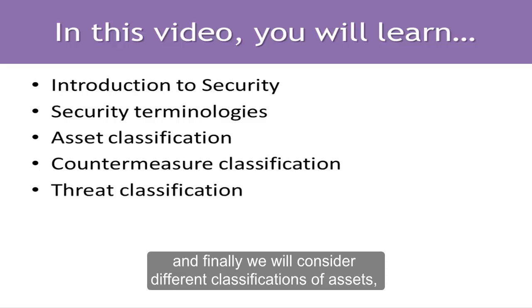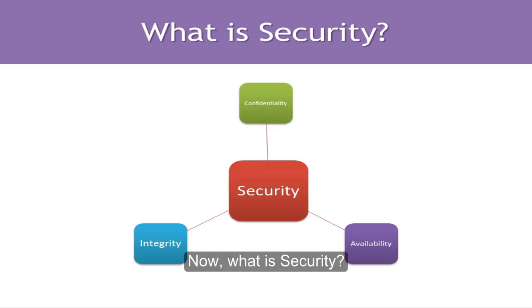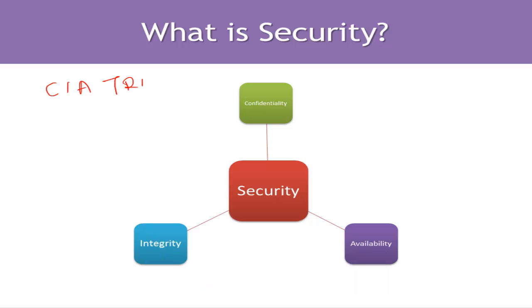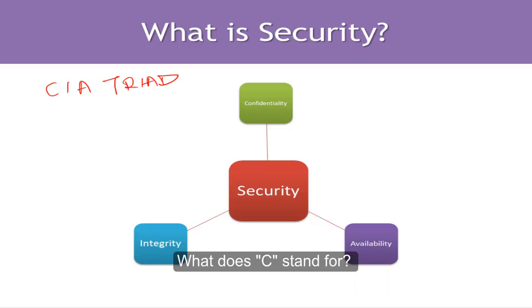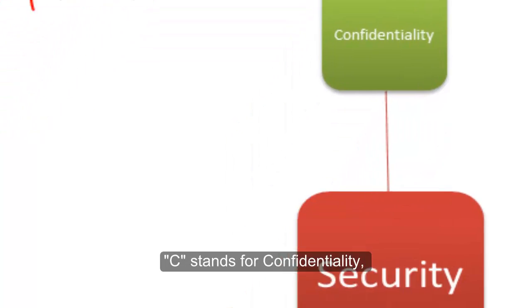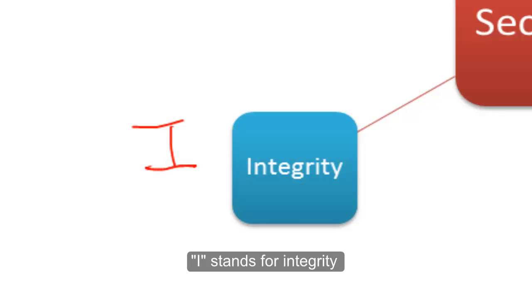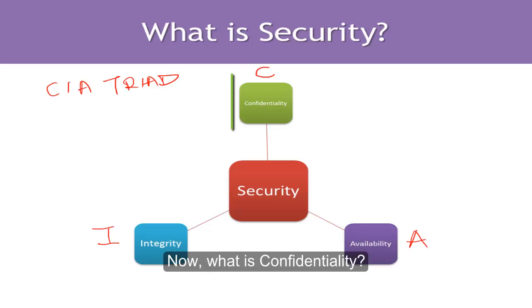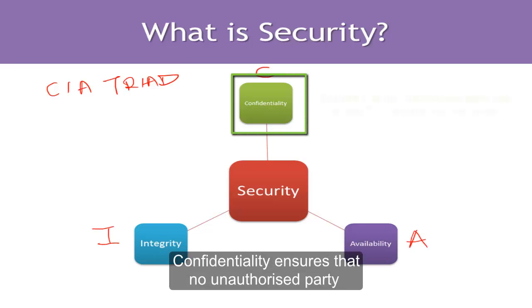We will also consider different classifications of assets, countermeasures, and threats. Now, what is security? Security is made up of three aspects known as the CIA triad. C stands for confidentiality, I stands for integrity, and A stands for availability.